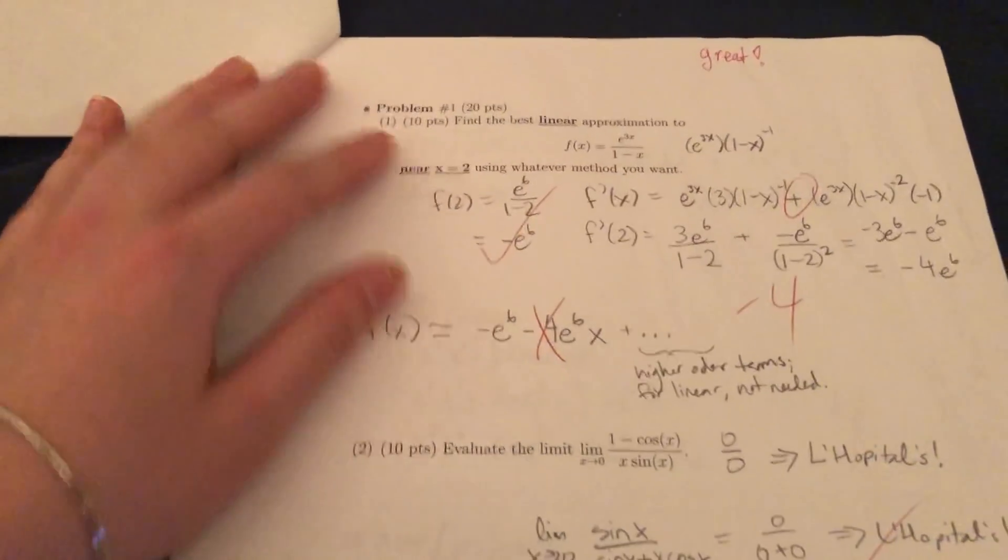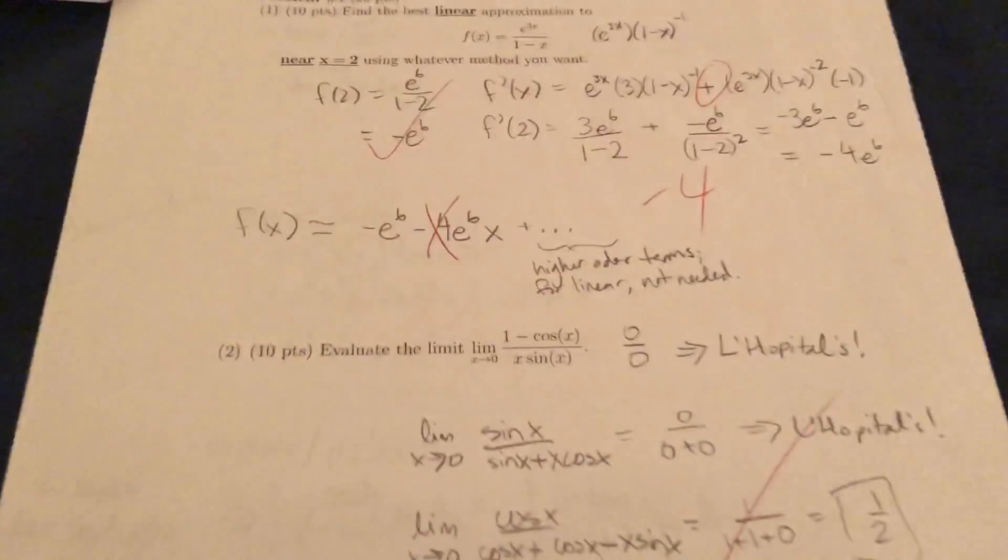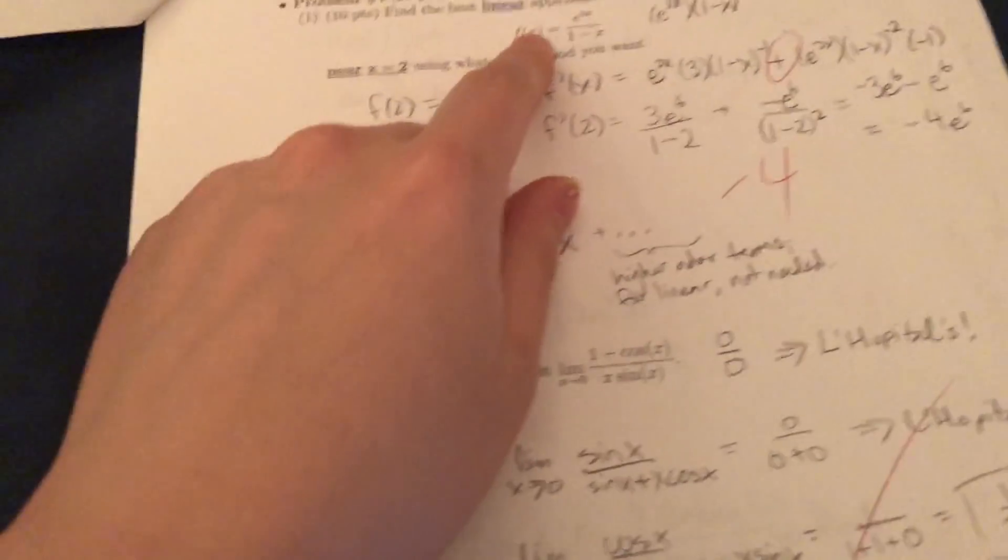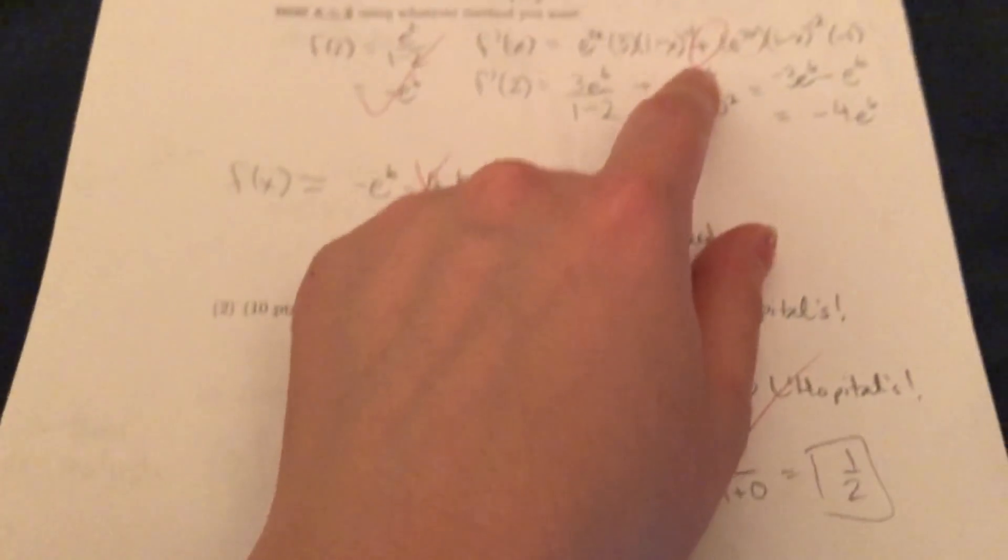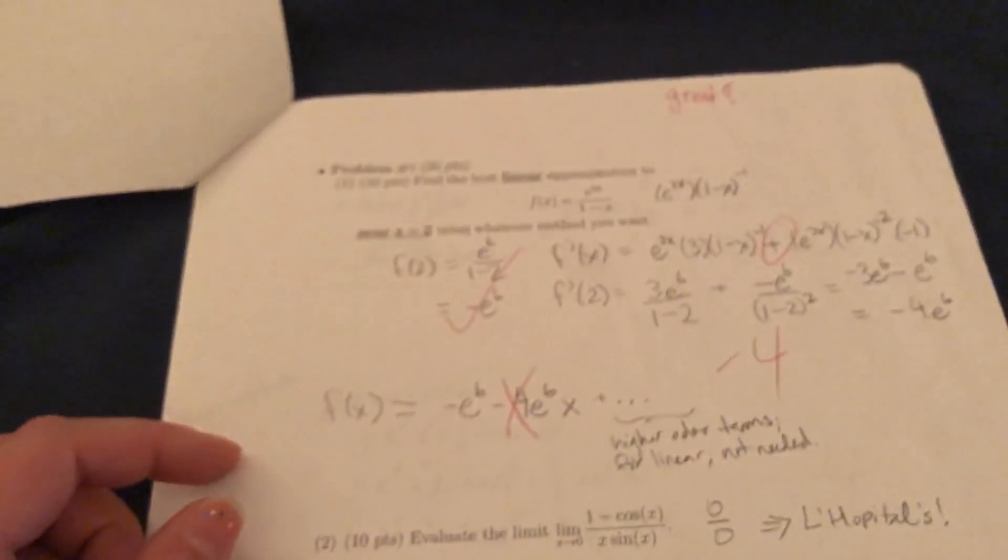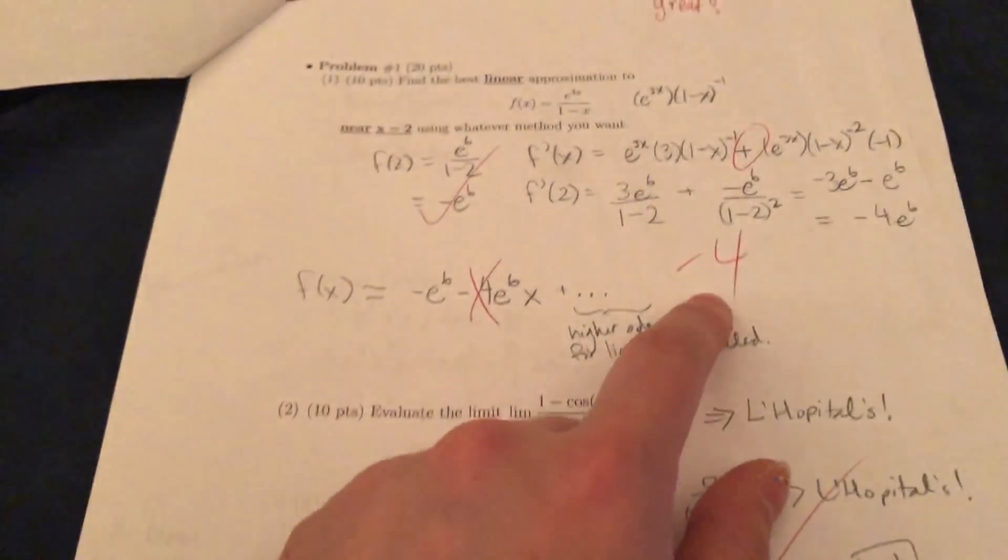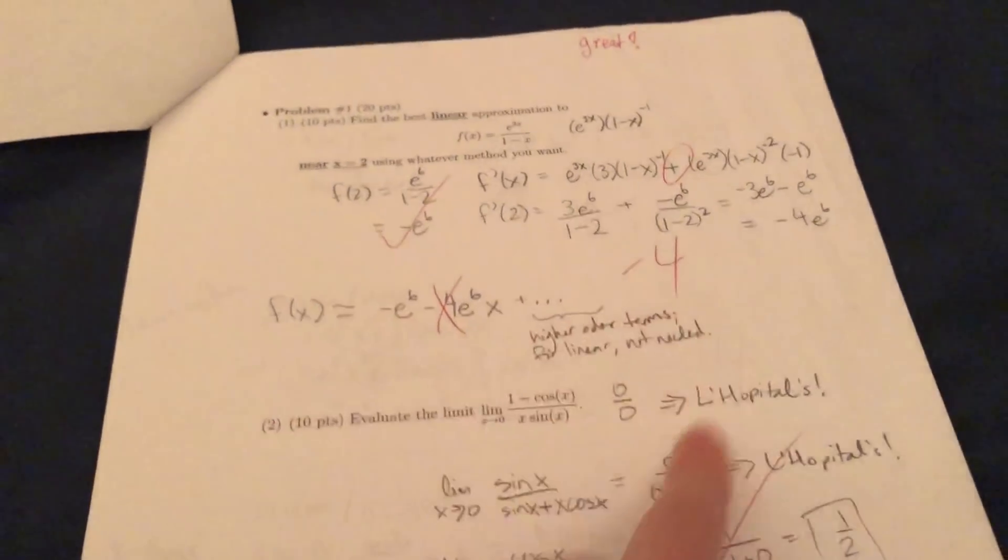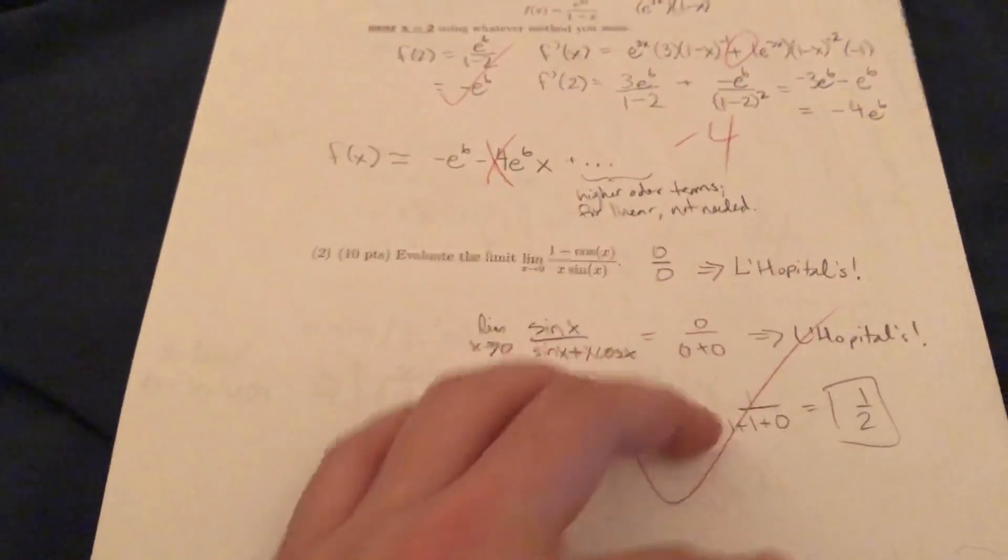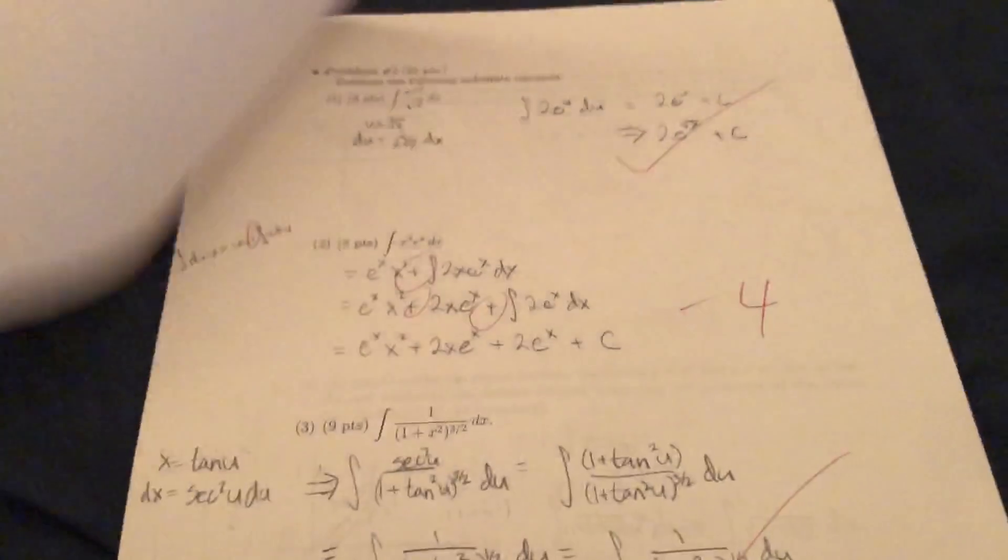All right. So for the next test, we're going to be looking at my final. Format's the same in the front. I did a little bit worse on this test. My grader says great. Hooray. It says find the best linear approximation to this using whatever method. It looks like I made a sign error or something. And they took off points because of that. So kind of sad. Looks like I did good here. L'Hôpital's. Hooray. Gotta leave the limit. Limits are easy.